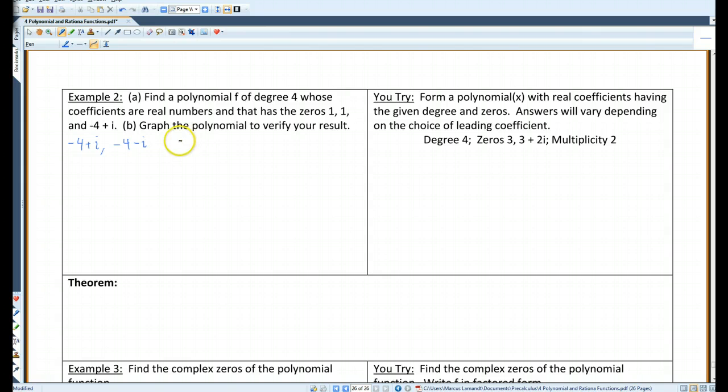Now, because of the factor theorem, if f of c equals 0, then x minus c is a factor. So we can write it like this. We know that it has the zeros 1 and 1, so I've got f of x times some coefficient a: x minus 1, x minus 1, x minus negative 4 plus i, and x minus negative 4 minus i.